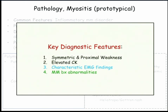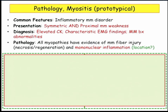On the boards, they're never going to give you an EMG, so you don't need to worry about that. What they will give you is a clinical description, and then they're going to bring you to pathology. When they test myositis on the boards, it's purely pathology. Those four diagnostic criteria haven't changed in 30-plus years.